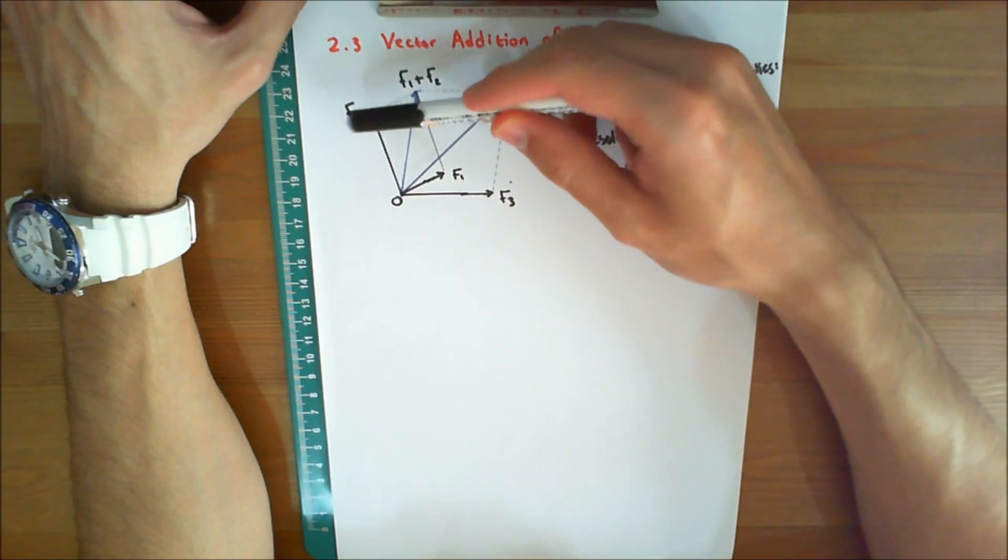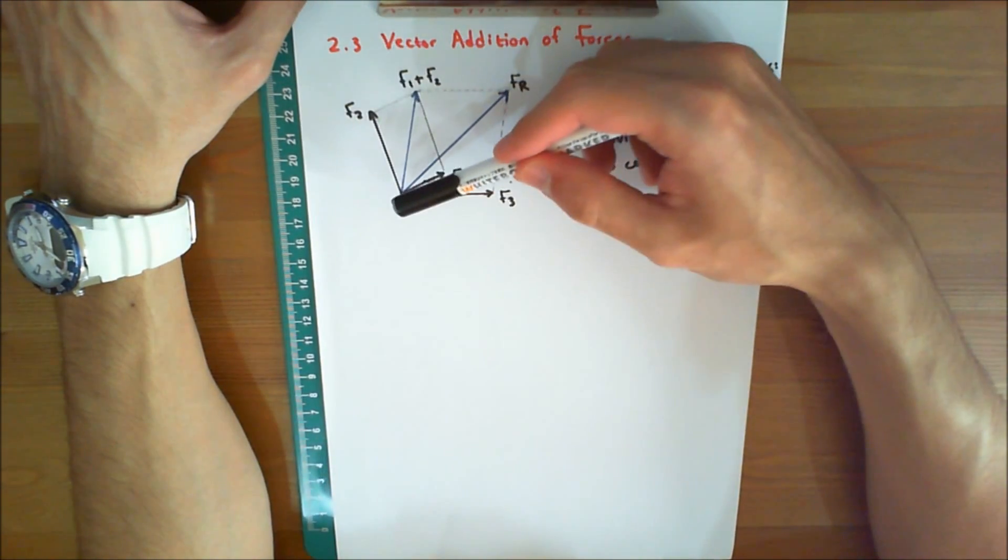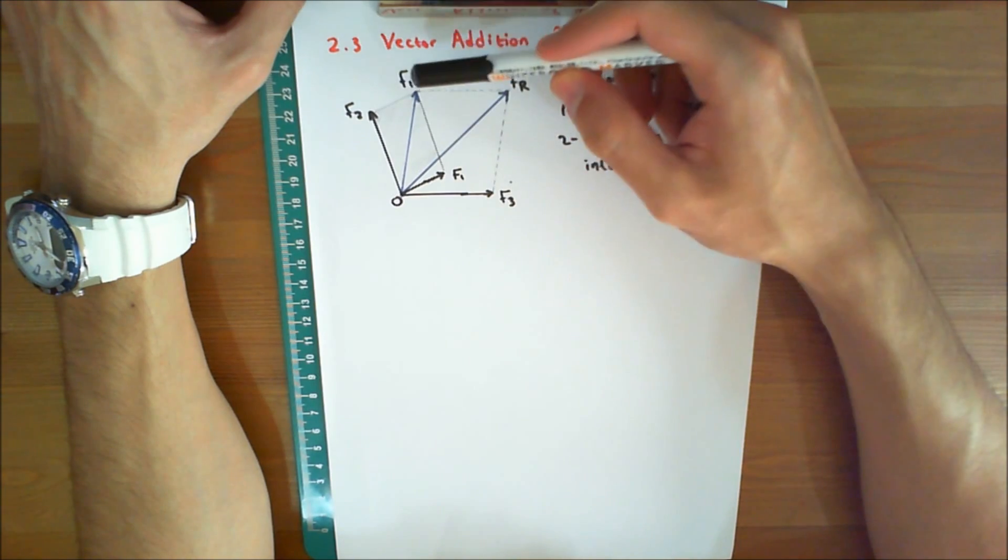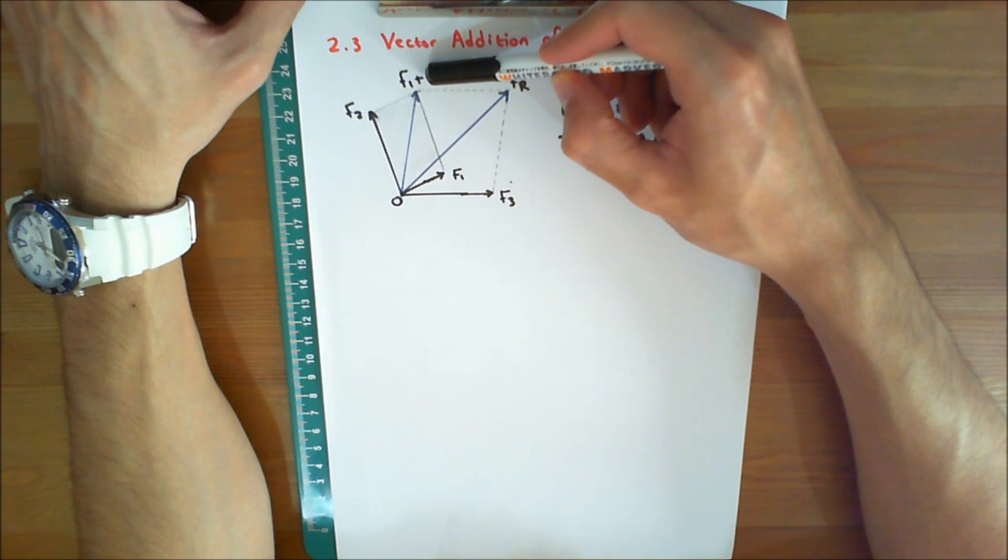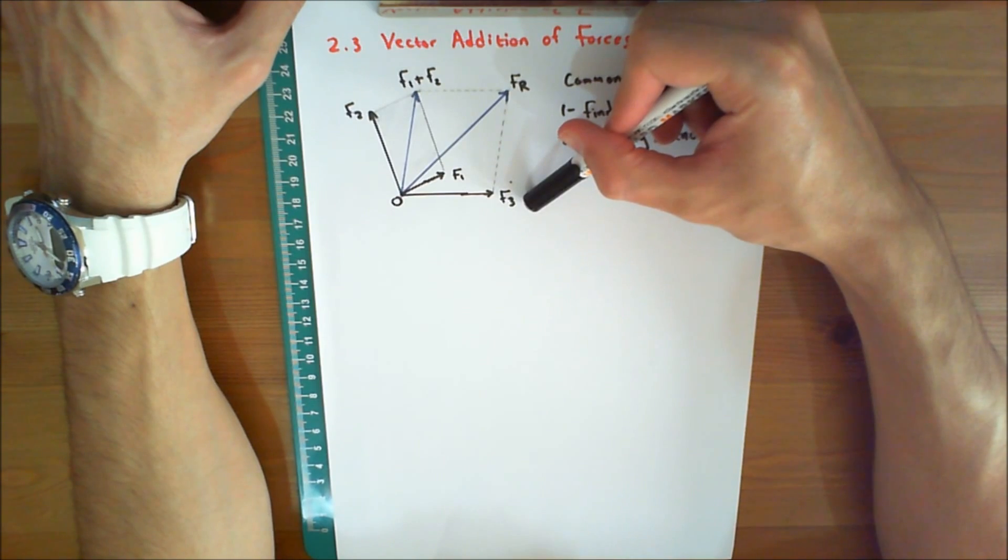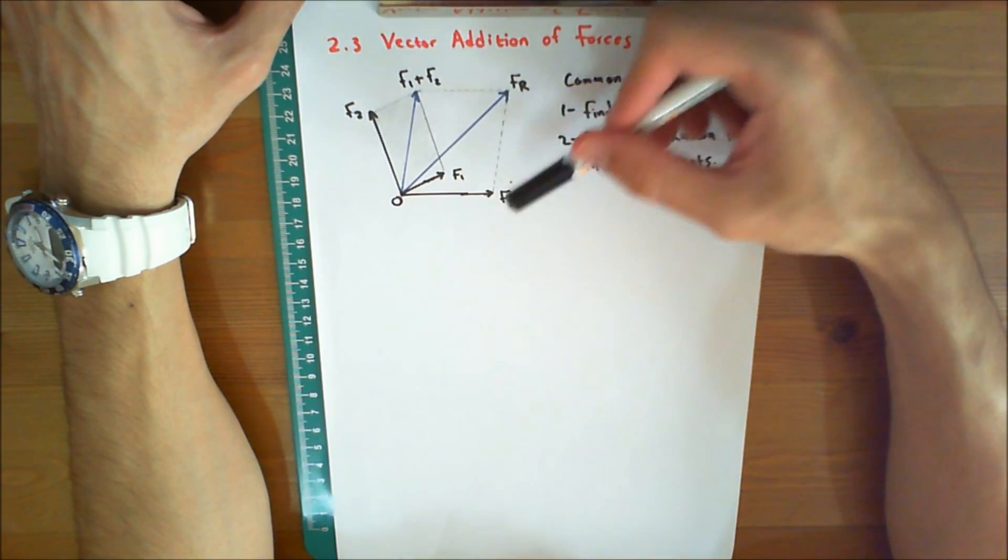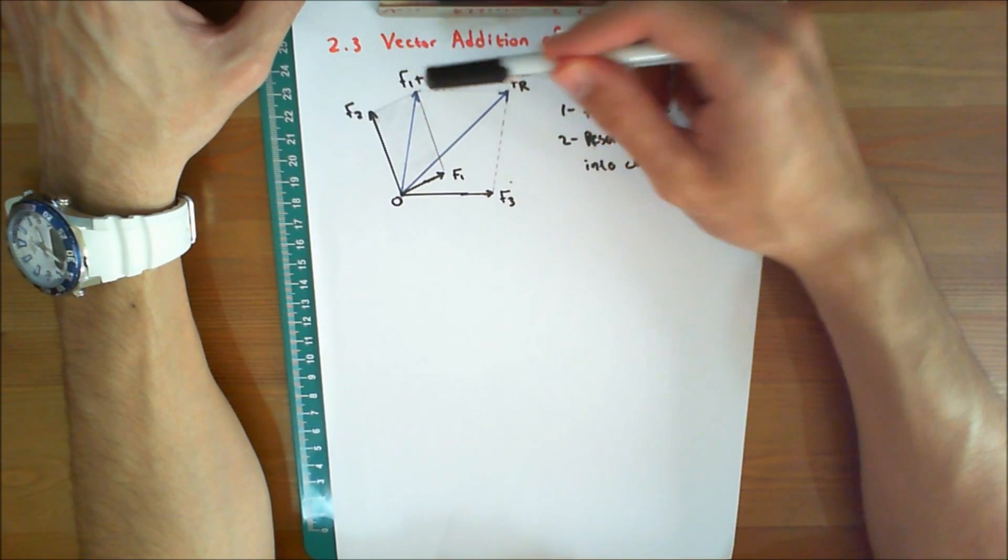if the forces F1, F2, and F3 act at a point O, the resultant of any two forces is found, say F1 plus F2, and then this resultant is added to the third force F3 to find FR, which means FR equals F1 plus F2 plus F3.